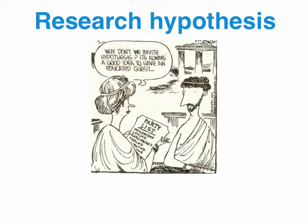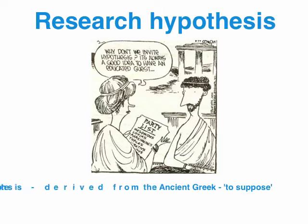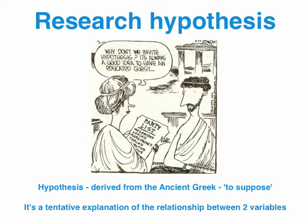Before we get into the specifics in terms of the attributes and the key ingredients of a research hypothesis, and we'll throw in a couple of examples at the end, let's do a bit of background work. A hypothesis is derived from the Greek word 'to suppose.' What we're talking about is a tentative explanation of the relationship between two variables, the IV and the DV. It's like an educated guess, and based on further testing where we generate some descriptive and inferential statistics, we can either support or reject that educated guess.